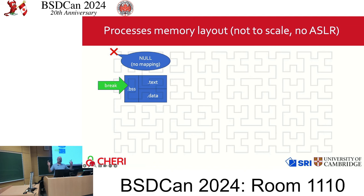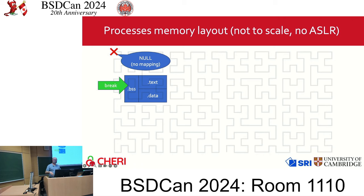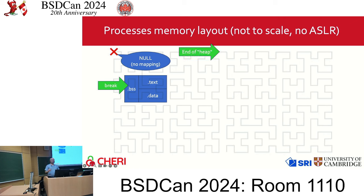A program starts with the text segment — the instructions — followed by the data segment, then BSS which holds global and static variables that default to zero. At the end is the break. In the bad old days, memory was allocated by extending just beyond the program and using the sbrk system call to adjust this. It became sbrk because 'break' is a keyword in C. I removed sbrk from CHERI ABI — it's a bad idea.